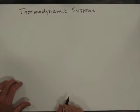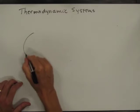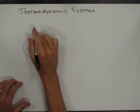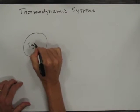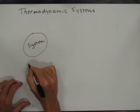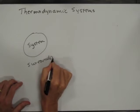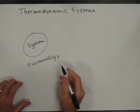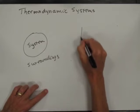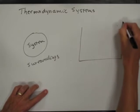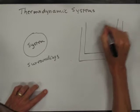We're going to start with a discussion of thermodynamic systems. This is just a very general discussion. Usually you have the system and the surroundings. A typical system might be, for thermodynamics, something we might actually work with in class, might look like this.